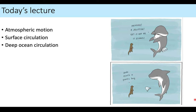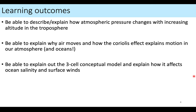Today we're going to be talking about atmospheric motion, because in order to understand surface ocean circulation, we have to know what's going on in the wind that sits right above the surface of the ocean. We will go over atmospheric motion, then surface circulation, and then deep ocean circulation — three components of today's lecture. By the end of the first section, you should be able to describe how the atmosphere changes in pressure with altitude, explain why air moves and the Coriolis effect, and explain the three-cell model and how it affects salinity and surface winds.